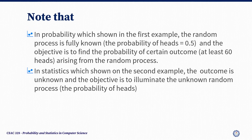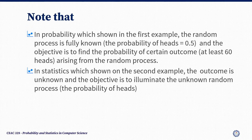Note that in the first example, the random process is fully known — we all know that the probability of heads is 0.5. The objective is to find the probability of a certain outcome, at least 60 heads, arising from that random process. In the second example, the outcome is known — 60 heads — and the objective is to illuminate the unknown random process, or the probability of heads.